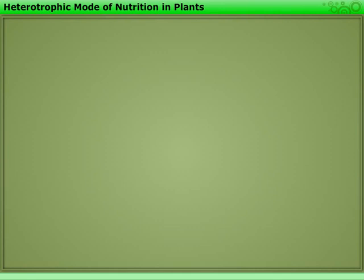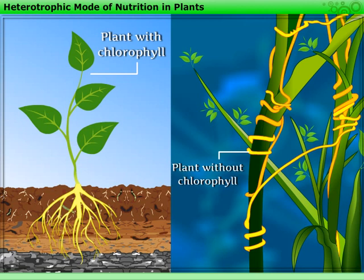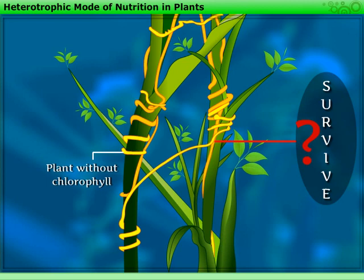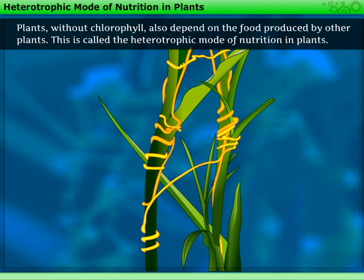We know that green plants have chlorophyll, but there are some plants which do not have chlorophyll, so they cannot synthesize their food. Similarly, plants without chlorophyll also depend on food produced by other plants. This is called the heterotrophic mode of nutrition in plants.